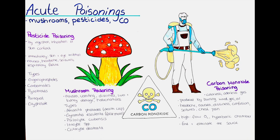In case of mushroom poisoning, it is important to seek medical attention immediately. Carbon monoxide intoxication is a type of poisoning that occurs when a person inhales high levels of carbon monoxide gas. Carbon monoxide is a colorless, odorless gas produced by burning fuels such as wood, gas and oil. Carbon monoxide poisoning can lead to headaches, nausea, dizziness and confusion. In severe cases it can cause loss of consciousness, seizures and even death. It can be prevented by ensuring proper ventilation in living spaces and avoiding the use of gas-powered equipment in enclosed spaces.